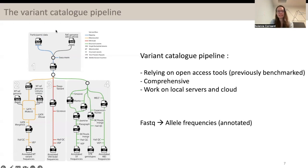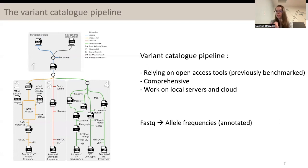The pipeline takes as input FASTQ files from participants and outputs VCF files — variant calling files with information about the variants, their position, the allele, the frequency of this variant within the population, which is the main information we want, the frequency by sex, as well as some annotation.